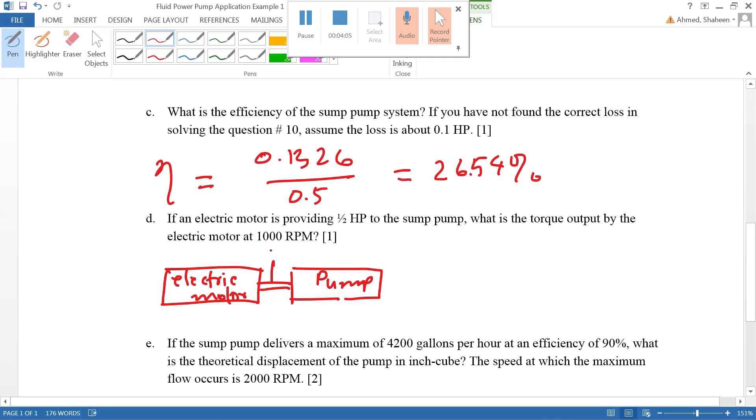This is asking what's the torque output by the electric motor. If it's half horsepower, we can write 0.5 horsepower. We know that equation: torque times rotation divided by 5250, then the torque will come in pound-feet. If you input N equals 1000 RPM and solve for T, then you get 2.625 pound-feet of torque by the electric motor.